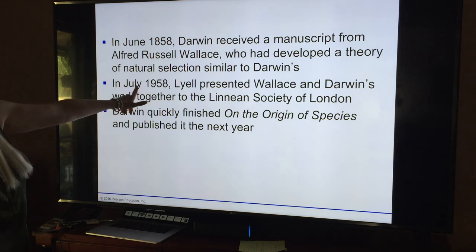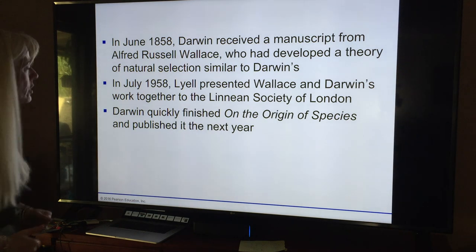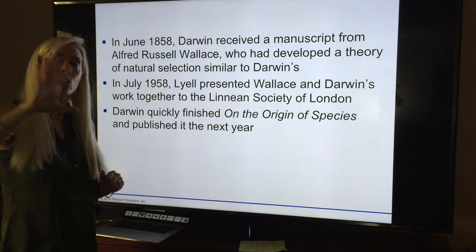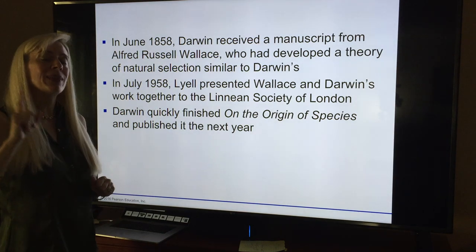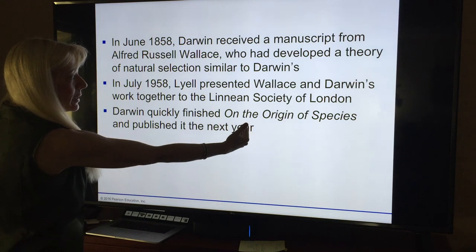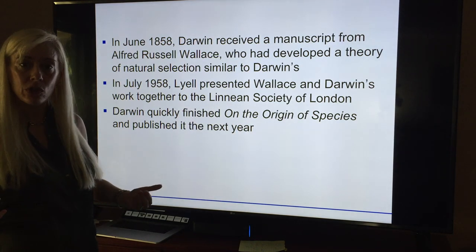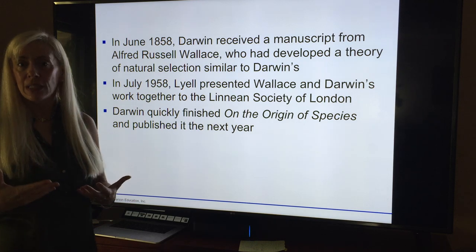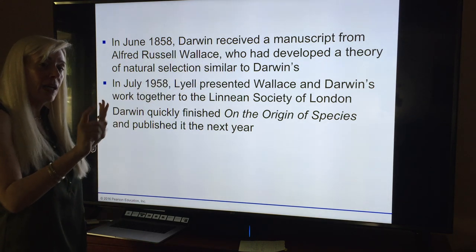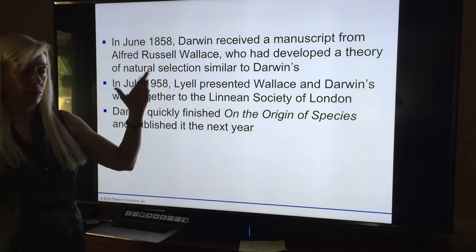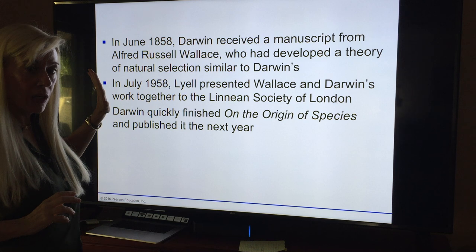Here's what caused Darwin to publish — in 1858 he received a manuscript from Alfred Russel Wallace, who had developed a theory of natural selection similar to Darwin's. Instead of going to South America, Wallace went toward India and came up with the exact same conclusions. Even though they presented together, we don't hear as much about Wallace because Darwin brought home five years' worth of dead things in jars — far more physical evidence — whereas Wallace had just written down his theories.